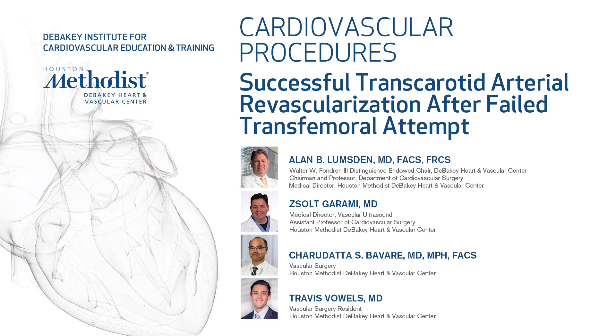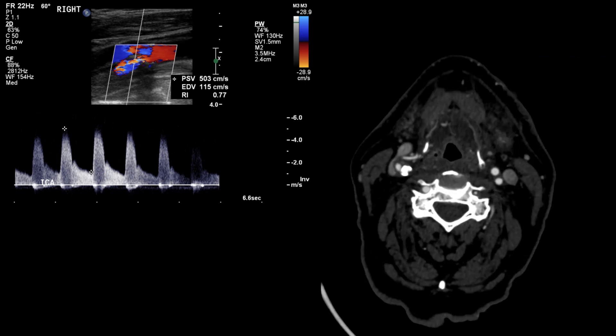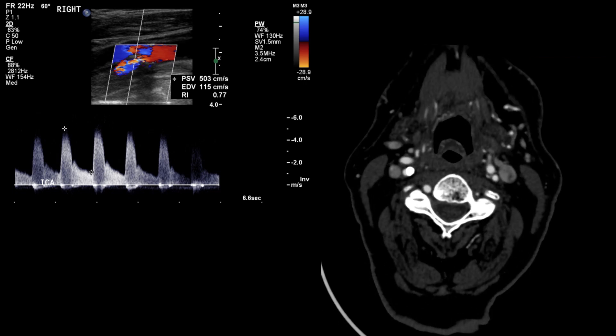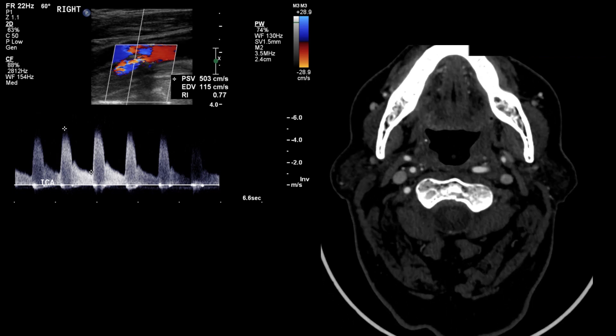This is a case of successful transcarotid artery revascularization (TCAR) after a failed transfemoral attempt. The patient is an 80-year-old male with asymptomatic severe right ICA stenosis and a history of esophageal cancer treated with prior neck radiation. Given his age and prior history of neck radiation, we offered him transfemoral carotid artery stenting.